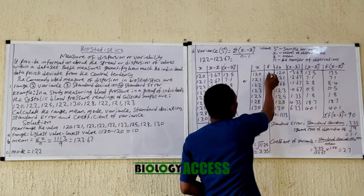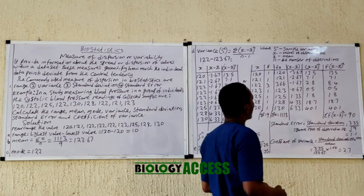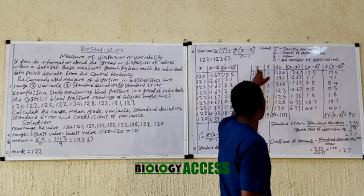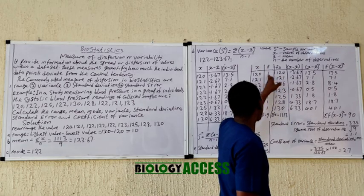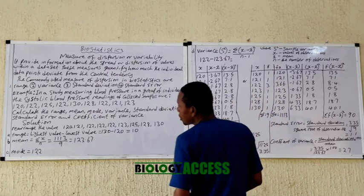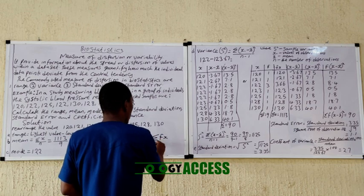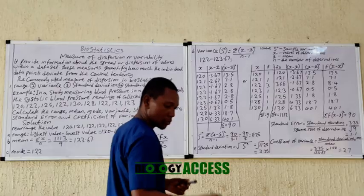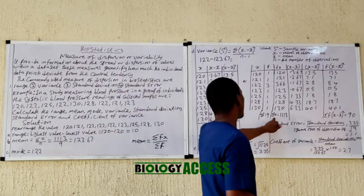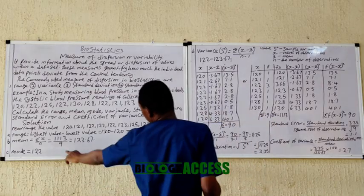For example, 120 occurs once, 121 occurs once, 122 occurs 3 times, 123 occurs once, and so on. You record the frequencies, then compute fx — frequency multiplied by each x value. Once you have all the fx values, you sum them. The mean is then summation of fx divided by summation of f, giving summation fx over 9 which equals 123.67 — the same answer as before.